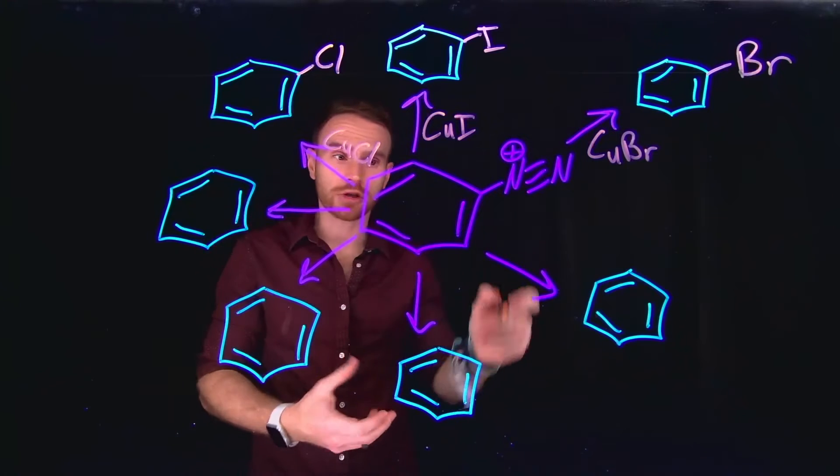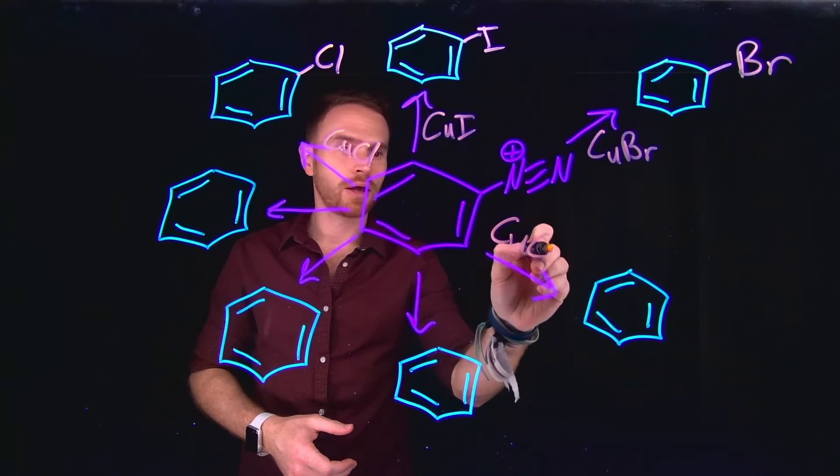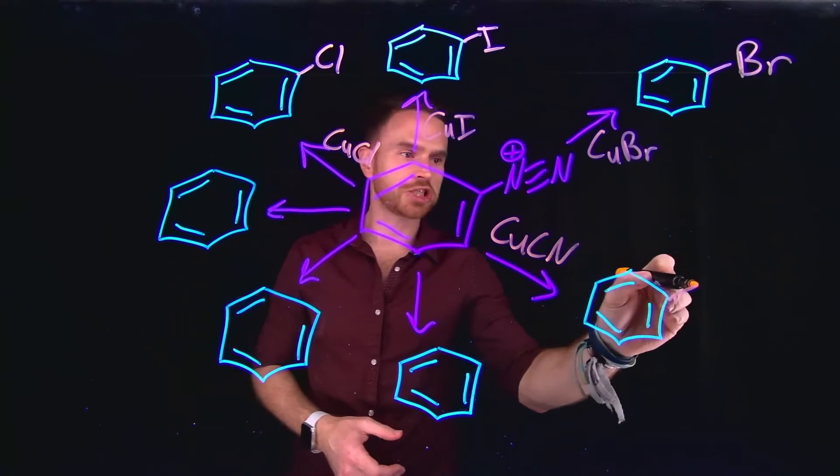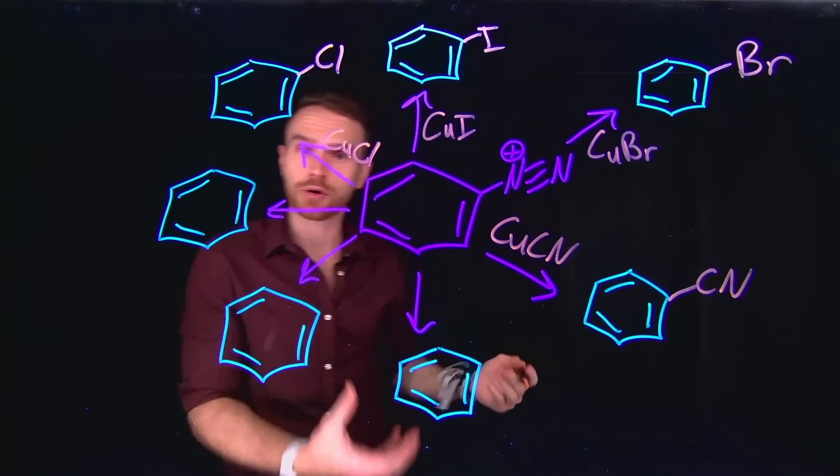The Sandmeyer reaction also works for cyanide. So you can use copper cyanide to exchange this position for a new cyano group.